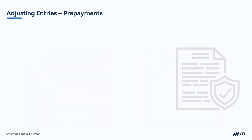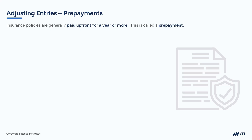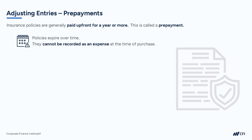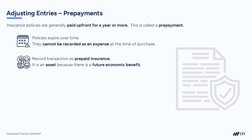Let's start with something called prepayments. Imagine you're buying an insurance policy. Typically, you have to pay for that policy up front, and it's typically for a year or maybe even more. Since that insurance policy expires over time, over 12 months let's say, it can't really be considered an expense right away in the current month. Instead, we need to spread that expense over the 12 months. So when we first pay for the insurance policy, we record it as an asset called prepaid insurance, or simply prepayments, because this policy is going to provide us a benefit over the future 12 months.